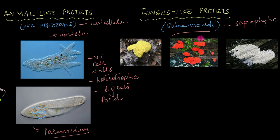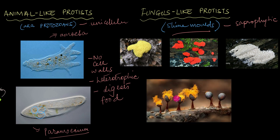These organisms, aka the fungi-like protists, also reproduce kind of like how fungi do — that is through spores. So they form these spores to reproduce exactly like how fungi do. But again, they're fungus-like, which means that they only share a few similarities with actual fungi.